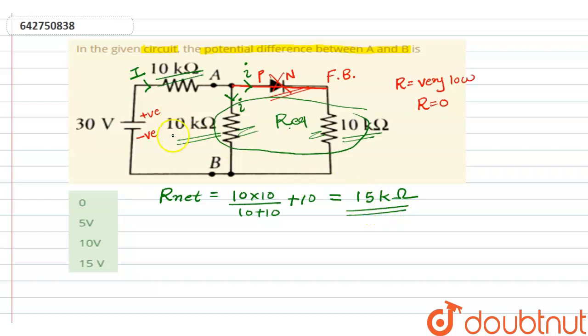Now we have V is equal to 30 volts. Let's find I. So I is equal to V by R, so I is equal to 30 divided by 15 into 10 raised to 3. That means we will get 2 milli-ampere.